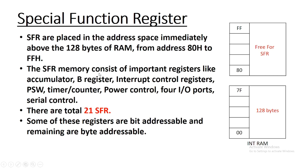The 8051 operations that do not use internal 128-byte RAM address from 00 to 7FH are done by a group of specific internal registers, and those internal registers are nothing but the Special Function Register. So 8051 has 128-byte RAM which ranges from 00 to 7FH. And to access this internal RAM, 8 bits are used. But using 8 bits, you can access 256 locations. Then what about the other 128 locations?